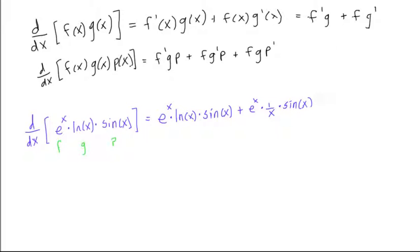And then we'll add this to the last one, which is f times g times p prime, so it's plus e to the x times ln x, times the derivative of sin of x is cos of x, cos of x. And that's how you do the product rule.